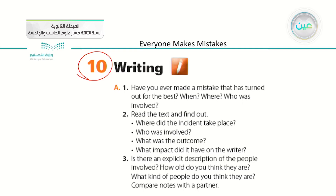Today, in the first part, we will talk about the writing lesson that we had yesterday. We will focus on how to write a story about an accident that happened to you and talk about the outcomes of this accident. Before we start the writing lesson, we have some refreshing questions that could help you remember events and incidents from your life. For example, number one: have you ever made a mistake that turned out for the best? When, where, and who was involved? The answer to this kind of question varies for each person because all these questions depend on personal experience.